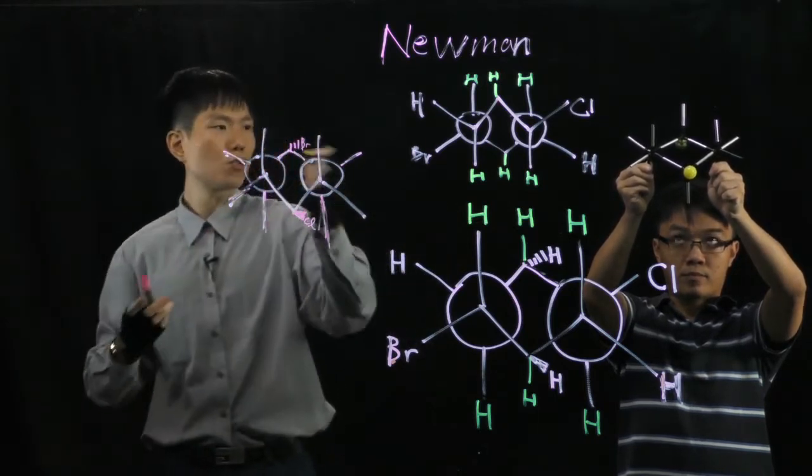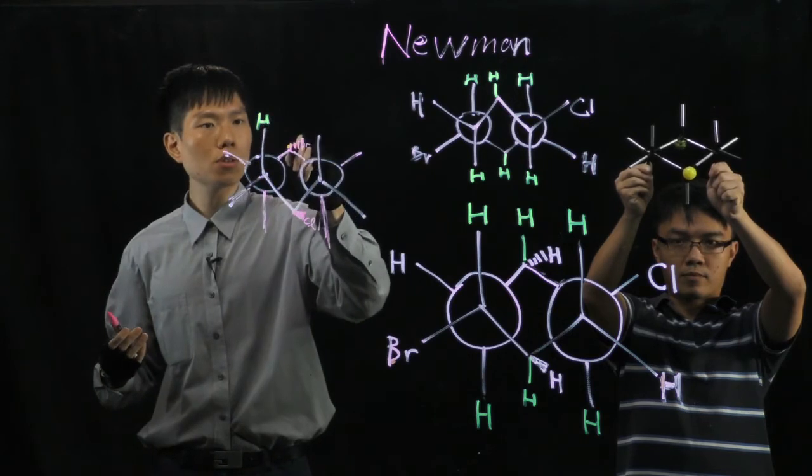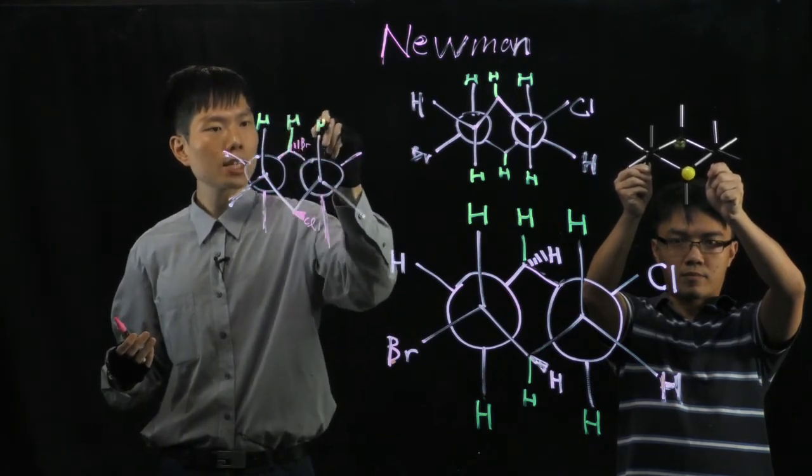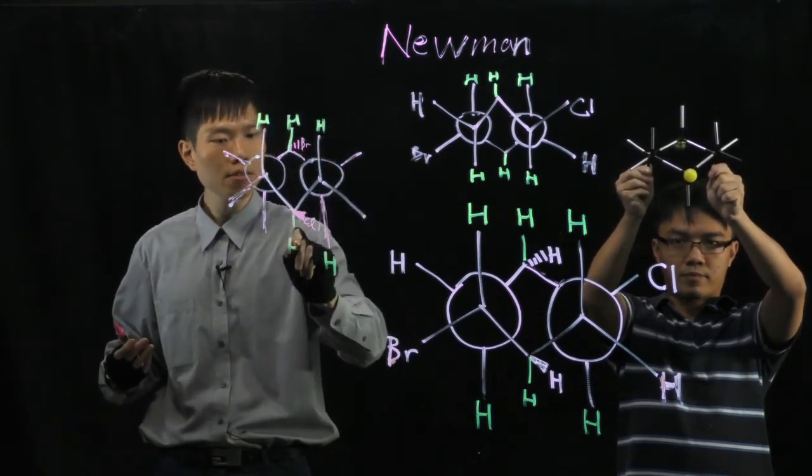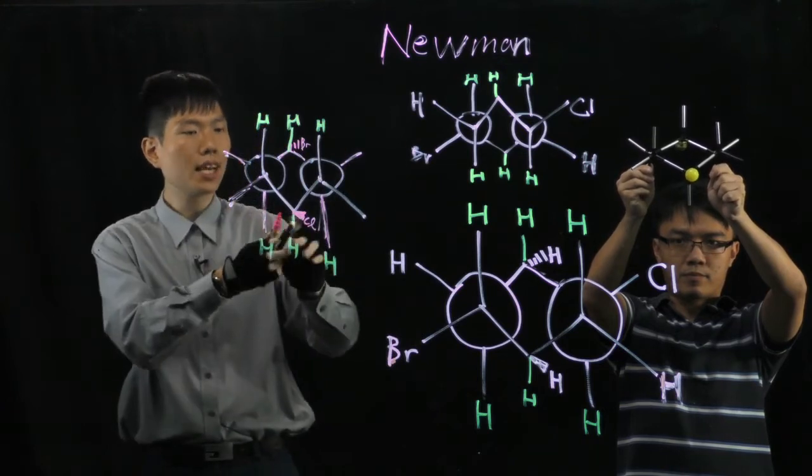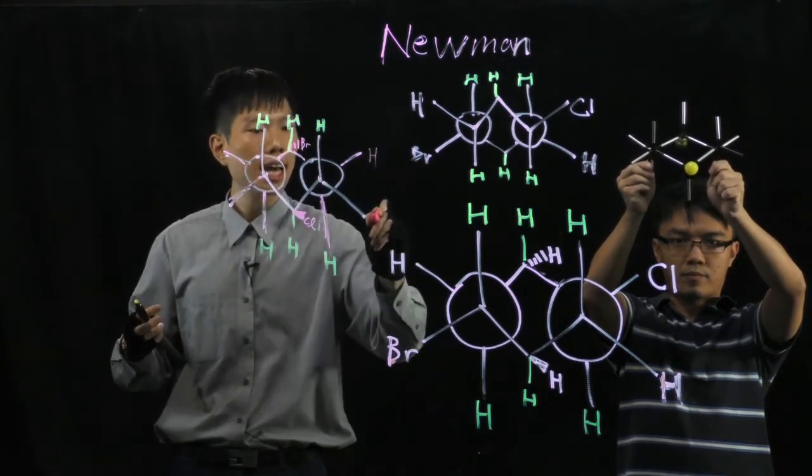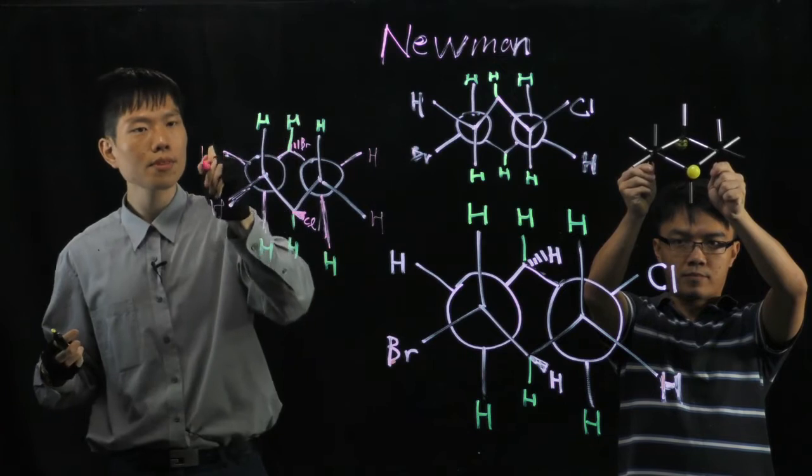So the rest of them we can just fill with hydrogen. Axial pointing up, axial down, and to the side they're all equatorial. They're just hydrogens.